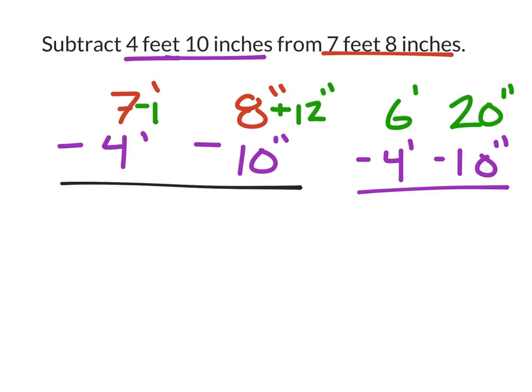So total after doing this subtraction I can look at it. I now have enough inches to take away 10. 20 minus 10 leaves me with 10 inches, and 6 minus 4 leaves me with 2 feet.